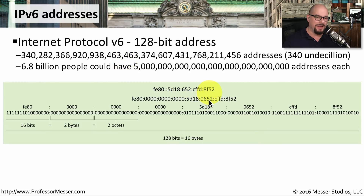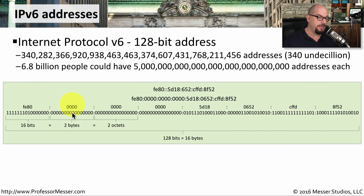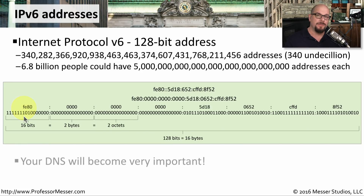An IPv6 address is represented in hexadecimal, with eight different groups of hexadecimal values making up the 128 bits. Each group is 16 bits long, or two bytes, making hexadecimal an ideal representation. With IPv4 we often memorized IP addresses, but with IPv6 that becomes much more difficult. That's why DNS will become much more important in IPv6, so you can reference devices by name rather than having to remember a full IPv6 address.